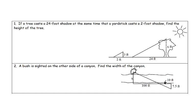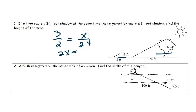Welcome back. A tree casts a 20-foot shadow, and at the same time a yardstick casts a 2-foot shadow. Find the height of the tree. What we have here is the same as we worked on yesterday: height over shadow equals height over shadow. So 2 times x is 2x, 3 times 24 is 72. Divide by 2 and x will equal 36.